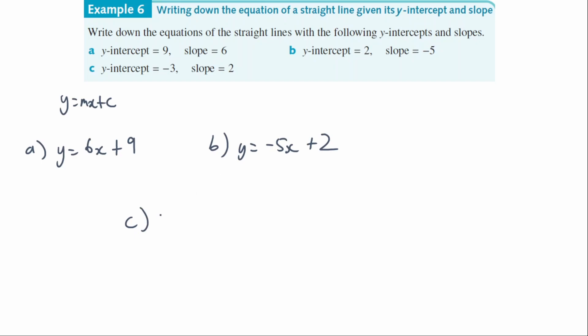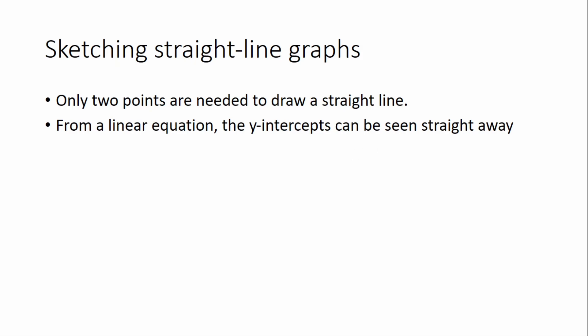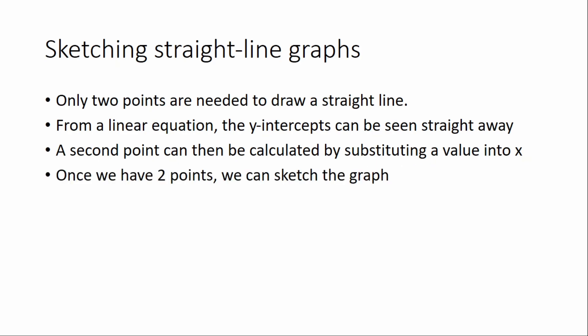For question (c), y-intercept is negative 3 and slope is 2, so y equals 2x minus 3. Now we're going to learn how to sketch straight line graphs. When sketching, only two points are needed to draw a straight line. Given an equation, we can read off the y-intercept as our first point, then calculate a second point by substituting any value of x.